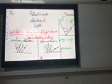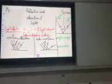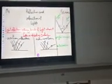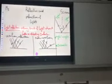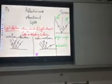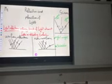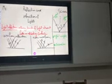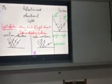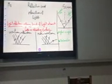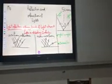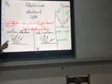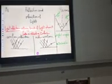We have two types of reflections. The first one is called Uniform or Regular Reflection. Regular reflection occurs on a smooth surface, where the incident rays are reflected in one direction. This surface is called a smooth surface.